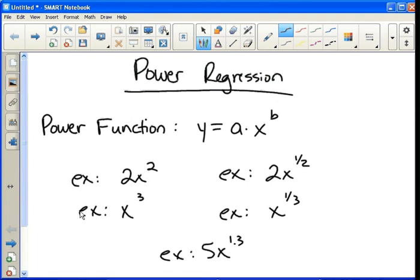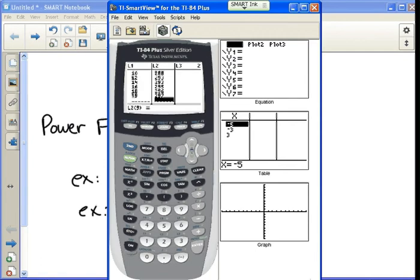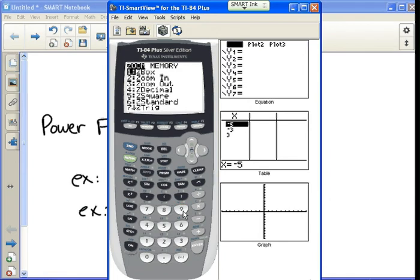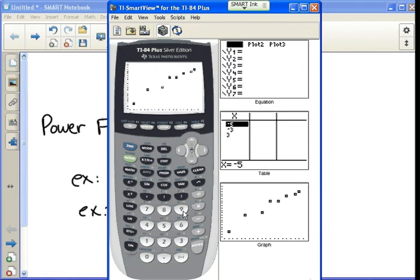Let me show you an example of how this would work in the calculator. I've got a data set already plugged in. Let's go and make sure our plot is on. Turn plot 1 on, and then do zoom stat, which is zoom 9.